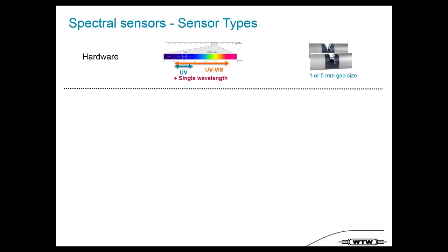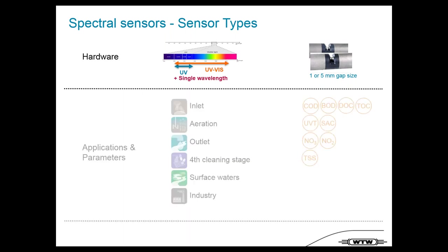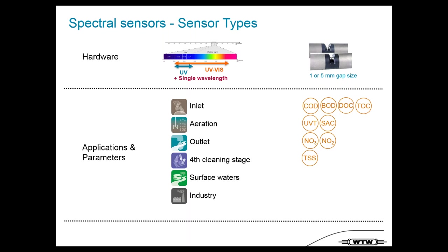We have a wide range of sensor types with different hardware: UV or UV-Vis sensors, single wavelength sensors, and one or five millimeter gap options. Importantly, we have sensors for different applications — inlet, aeration, outlet of wastewater treatment, fourth-stage cleaning, surface waters, and industrial applications. Across all these applications we can measure carbon parameters (COD, BOD, DOC, TOC), UVT, SAC, NO3, NO2, and TSS.